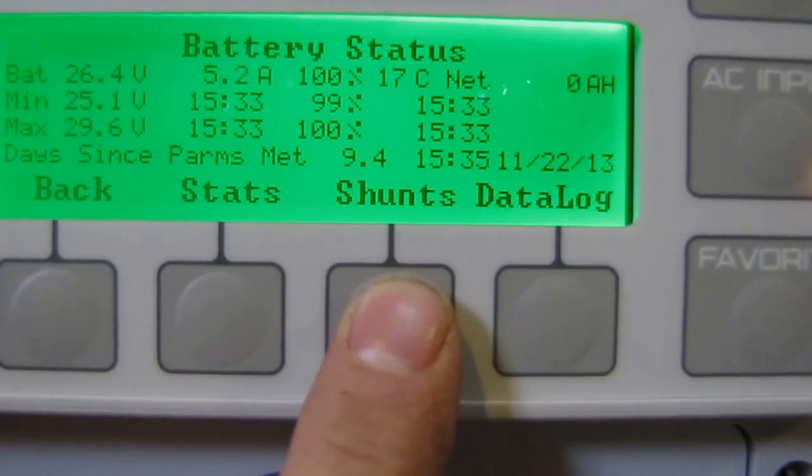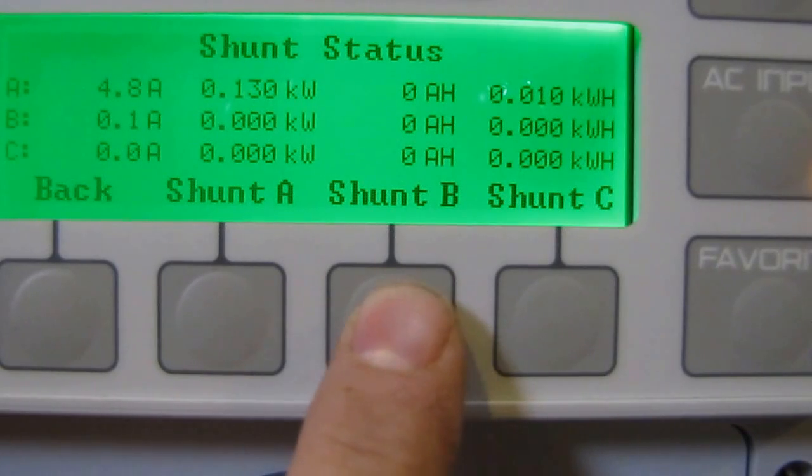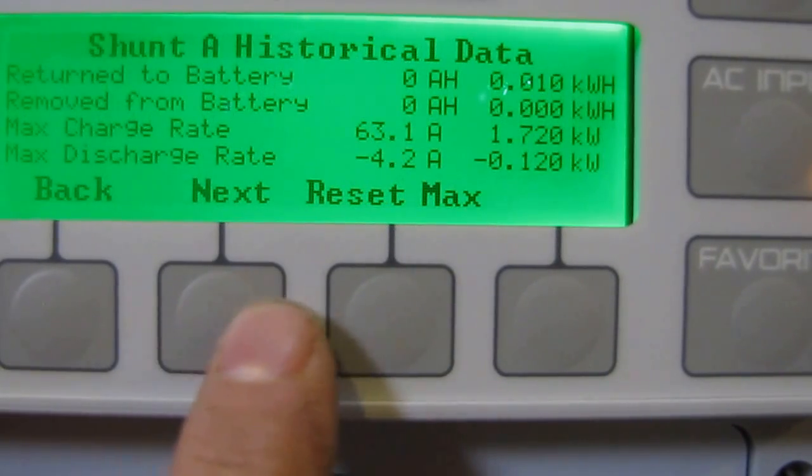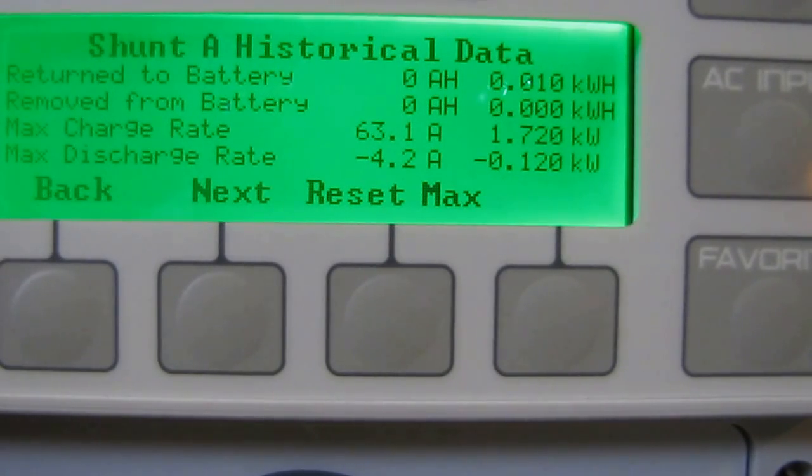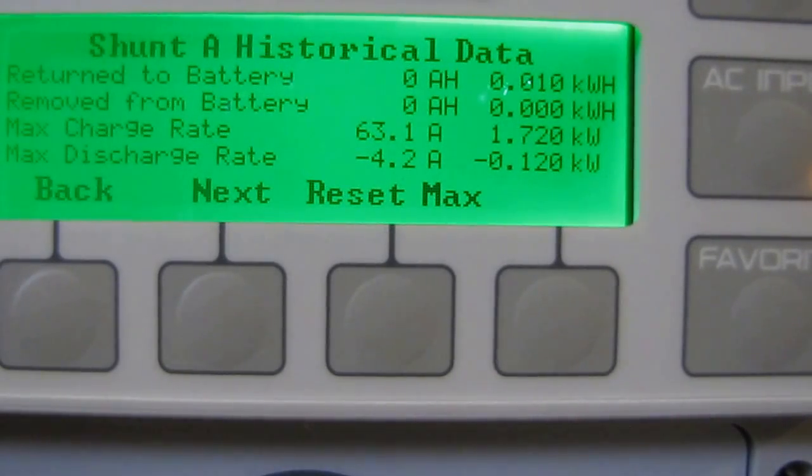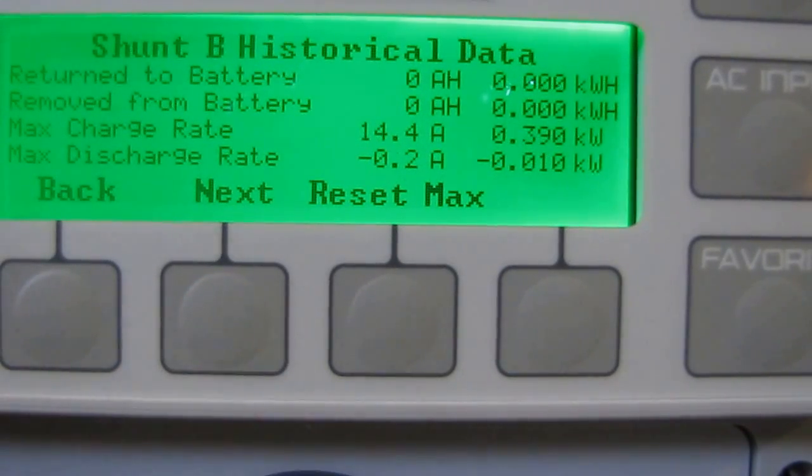Let's go to next. We've got shunts - Shunt A for solar and B for my wind. Let's go to Shunt A for today. Our max is 63.1 amps at 1,720 watts that we brought in today - that's our peak.